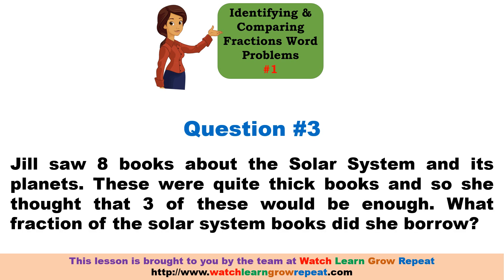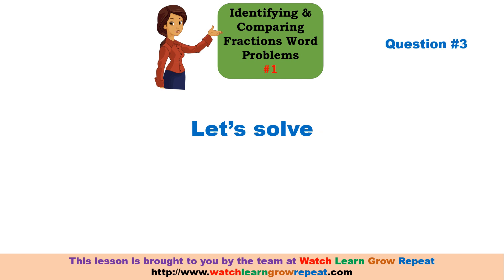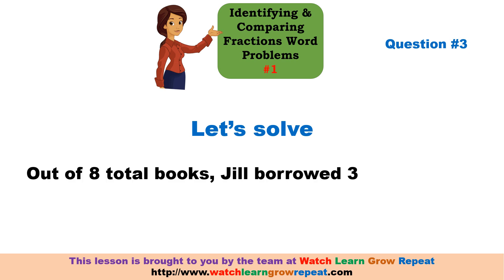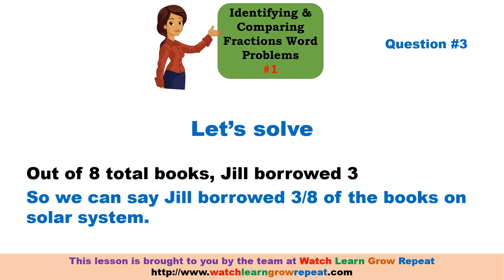Question number three: Jill saw eight books about the solar system and its planets. These were quite thick books, so she thought three of these would be enough. What fraction of the solar system books did she borrow? Out of the total of eight books on the solar system, Jill had borrowed three. So Jill borrowed three by eight of the books on the solar system.